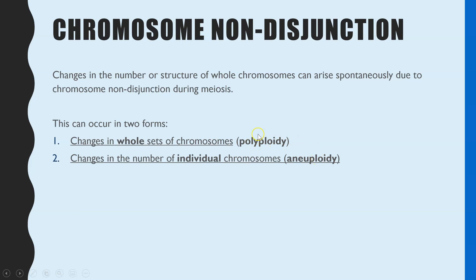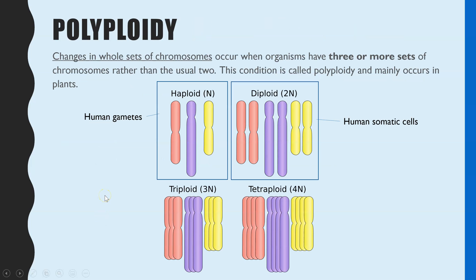Polyploidy — poly meaning many — is when every single chromosome is affected, so you will get a whole additional set of chromosomes. Instead of creating a diploid gamete, you would create a triploid gamete. Aneuploidy is when just one single chromosome is affected, so you will still create a haploid gamete, but it might have one additional or one too few chromosomes.